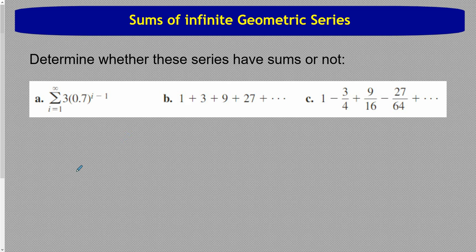We need to identify the r value. We're looking to see if r, more specifically the absolute value of r, is less than one or not. So r in this case is 0.7. That is less than one. So this one's going to be yes.